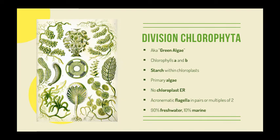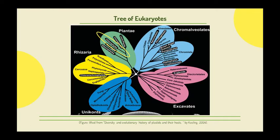P. boryanum is a member of the division Chlorophyta, or green algae, which mainly harbor chlorophylls A and B, and whose major reserve polysaccharide is starch that is formed within the chloroplast instead of the cytoplasm. Being a member of Chlorophyta, P. boryanum is a primary alga, and hence the chloroplast is bound by only two membranes with no chloroplast ER. Green algae have acronematic flagella in pairs or in multiples of two. 90% of Chlorophyta are freshwater whereas 10% are marine. Here we can see the relatedness of chlorophytes with other primary algae.